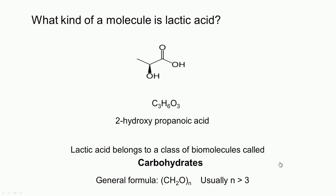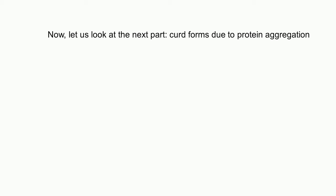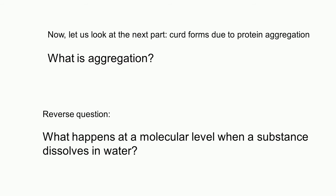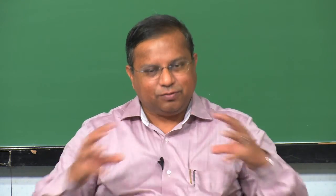These are all present as part of the reaction intermediates that happen in the cell. We said acid formation and then protein aggregation. What is aggregation? What do we mean by aggregation from a microscopic sense? To understand that, let us ask the reverse question: what happens at a molecular level when a substance dissolves in water? We said curd forms when the protein molecules aggregate and get out of water.